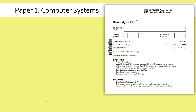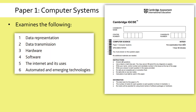But when you come to actually sit the paper, what will be shown on the front will reflect what exactly you are doing. The actual paper should be the same, or at least the same content. Paper 1 is our more theory paper. It's got six topics with quite a lot of content you've got to know.